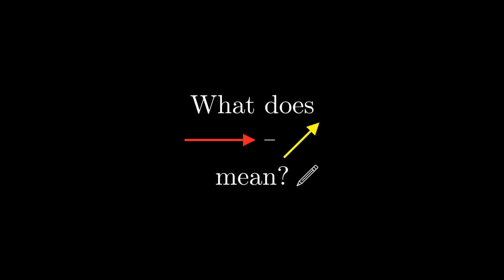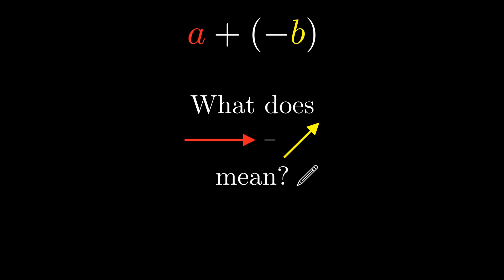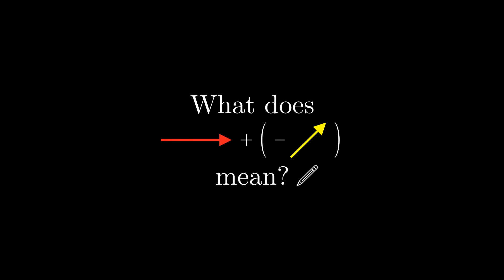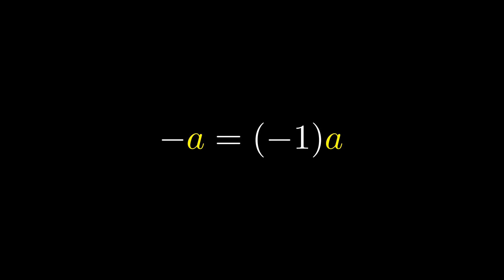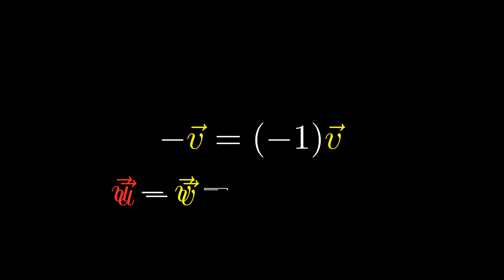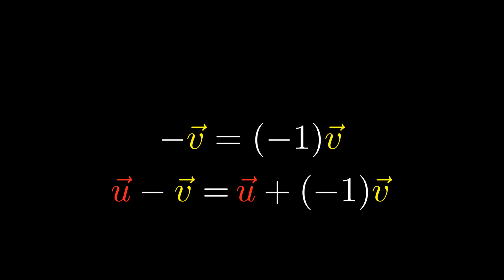Now that we know how to add vectors, what about subtracting them? This is doable as well — pause the video and try to figure this out for yourself first. To figure this out, let's look back at the subtraction of numbers. Subtracting two numbers can be defined as adding the first number to the negative of the second. We can try to do the same thing with vectors. This raises a new question: what is the negative of a vector? With numbers, the negative of a number is negative 1 times that number, and we can use the same definition here for vectors. Thus we define subtraction using this equation, though we usually write it more simply.